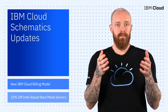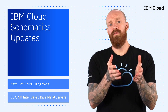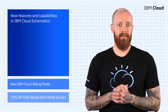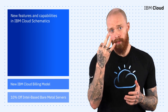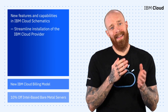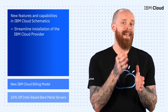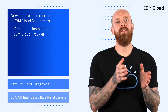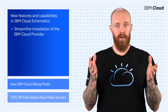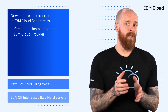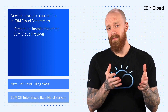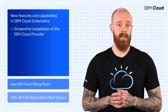To get the ball rolling this week, let's take a look at some new features and capabilities we've released in IBM Cloud Schematics. There are three that I'm going to focus on. First, you can now streamline the installation of the IBM Cloud provider by pulling directly from the Terraform registry. This is great news because you no longer need to manually install and configure the provider, and you can specify the exact version that you want to work against.